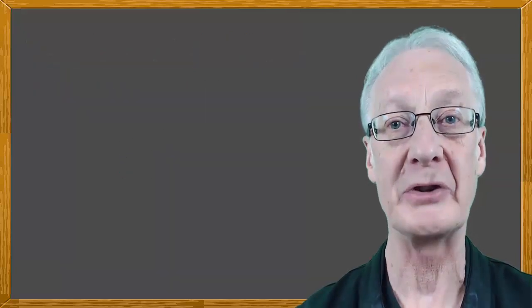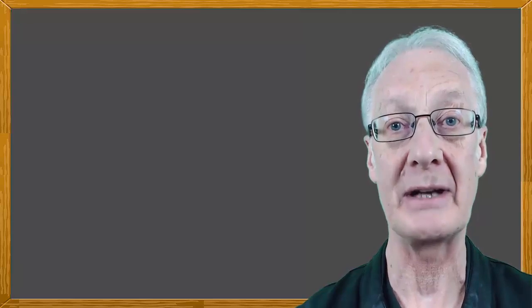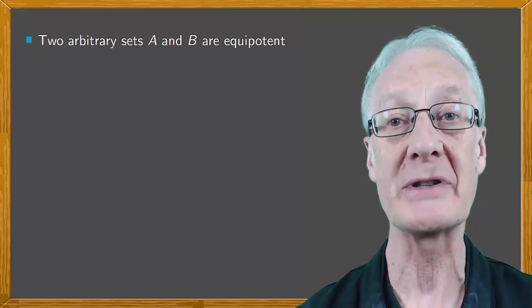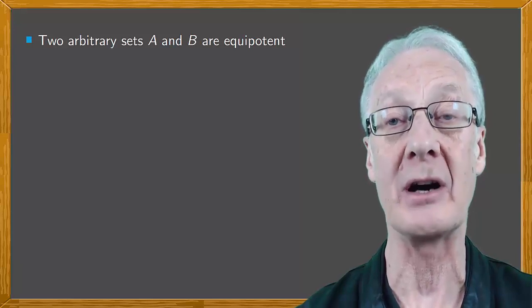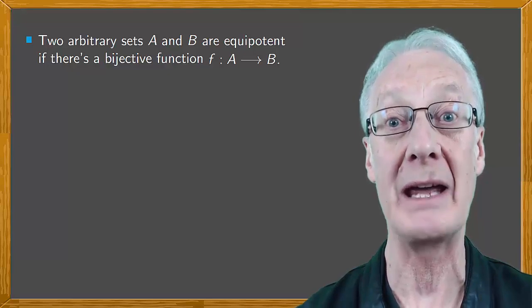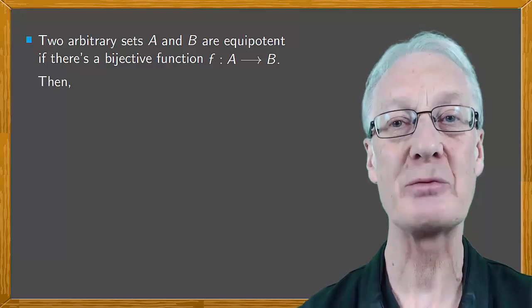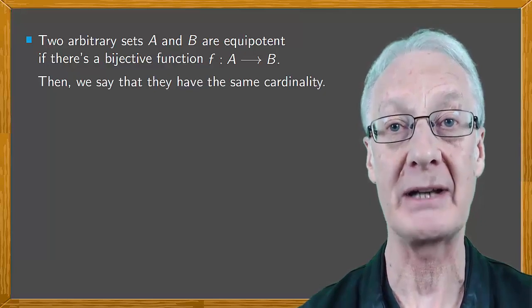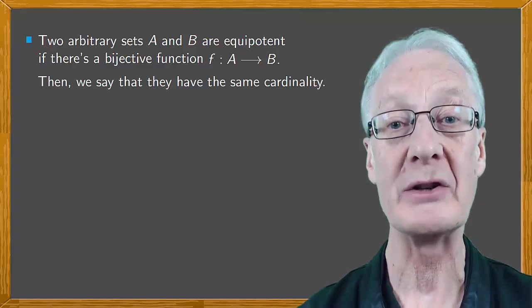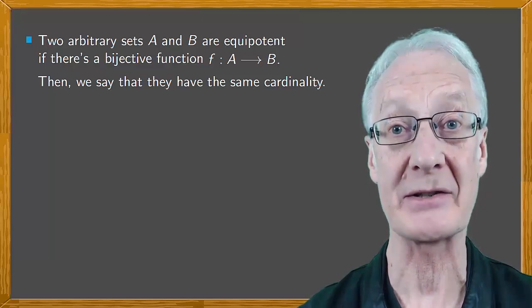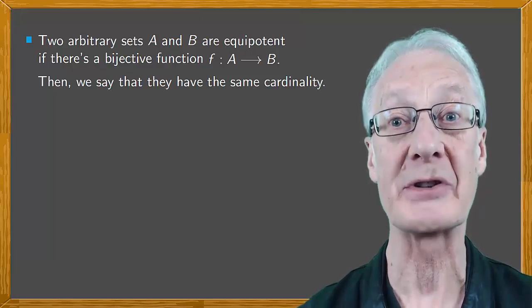This property allows us to define the concept of cardinality of arbitrary sets. We say that two arbitrary sets, finite or infinite, are equipotent if there's a bijective function F from A to B. In a case where two sets are equipotent, we say that they have the same cardinality. So, we can generalize the concept of cardinality to infinite sets, but we have to be prepared for some surprises.